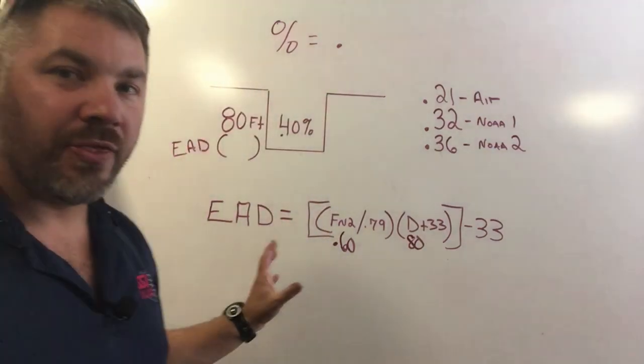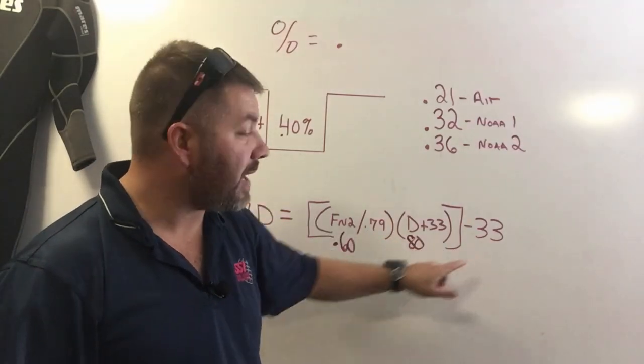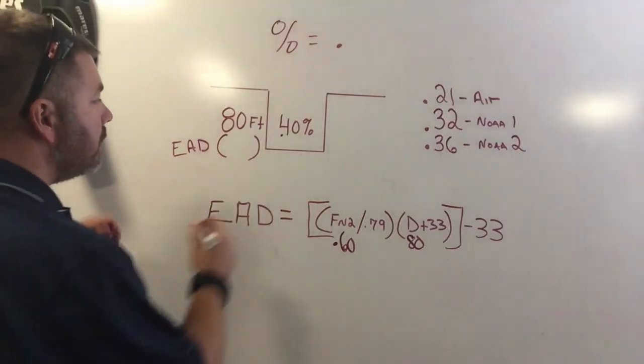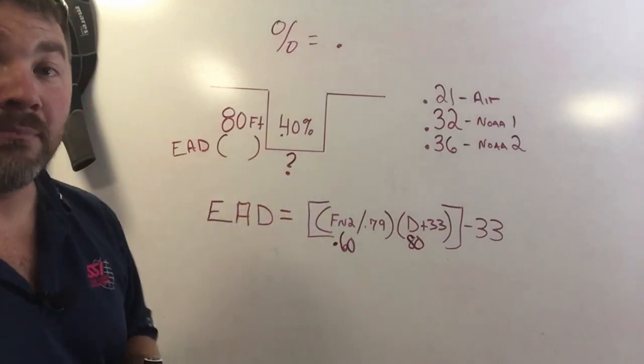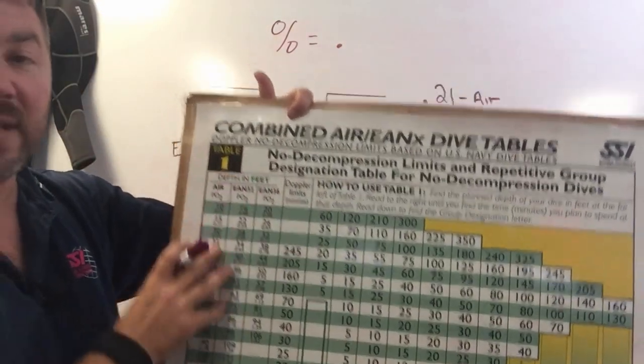Now that I've got those numbers plugged in, I can work it down. Once I finish the bracketed area I can come back over here and get my total answer. What I'm looking for is my maximum bottom time at 80 feet while using a blend of nitrox or enriched air that I simply don't have a table for.